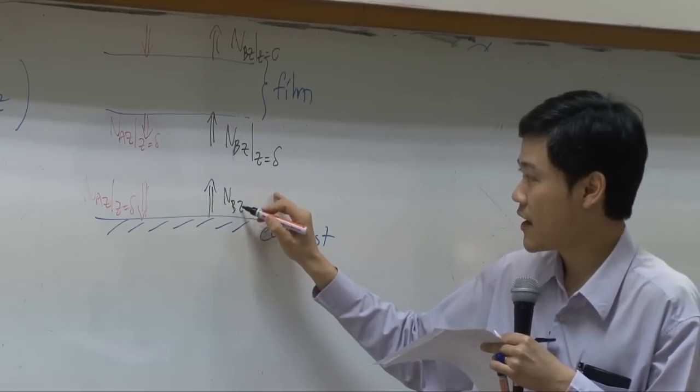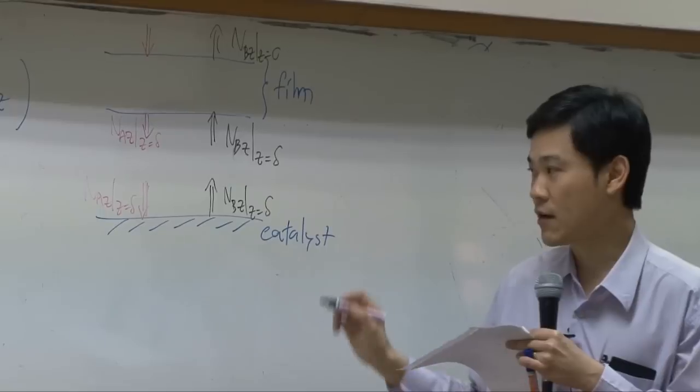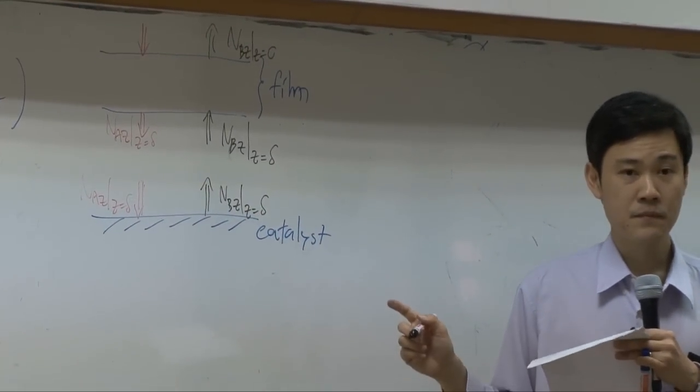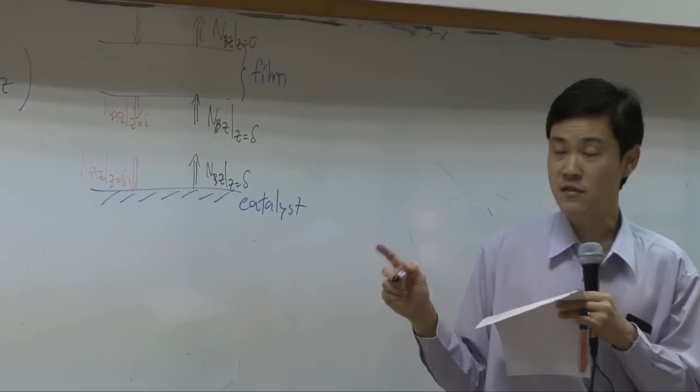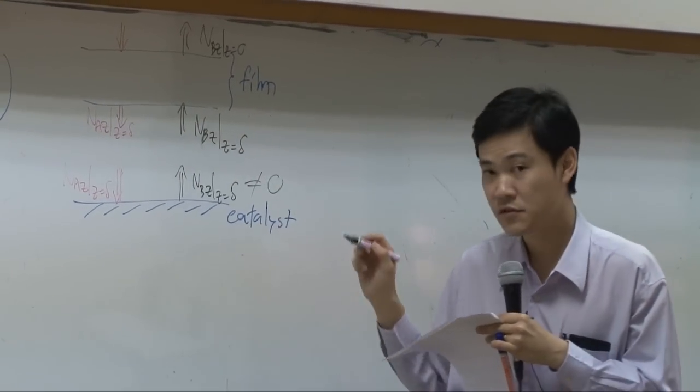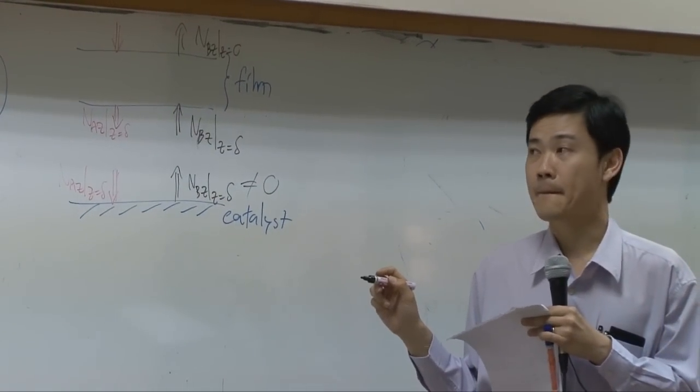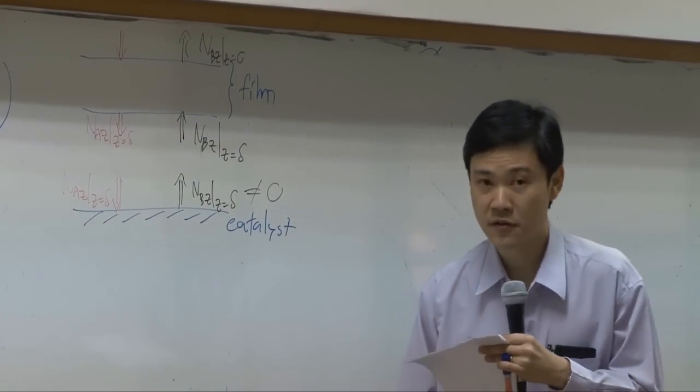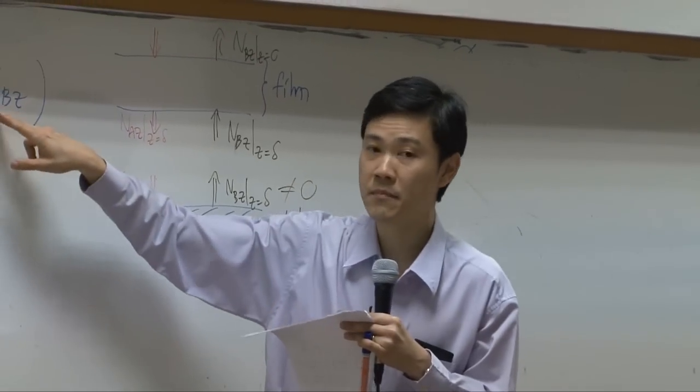This flux is generated from the reaction here. So this N_B_Z as Z equal to delta. Is it zero? No, it's not. It's not zero. So this value is not zero. Alright? If it is not zero, what should we do about N_B_Z?